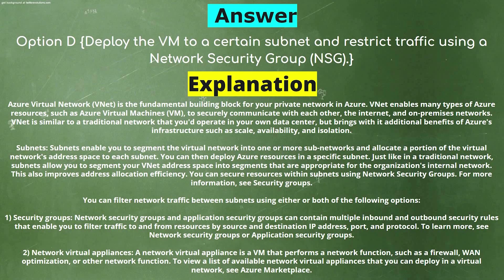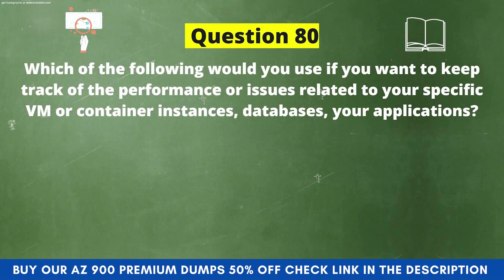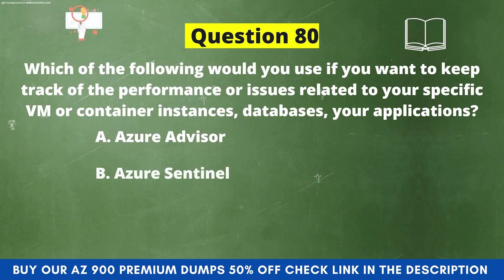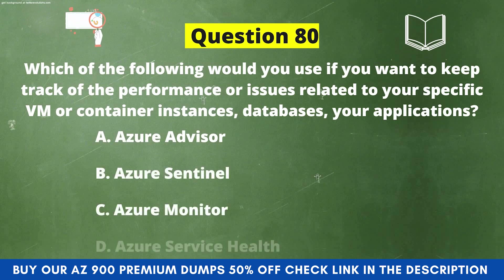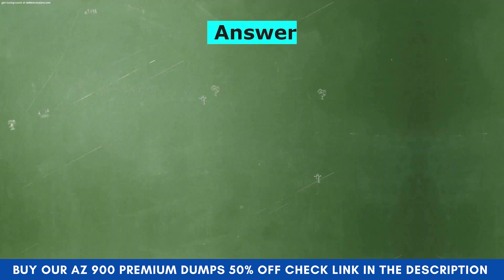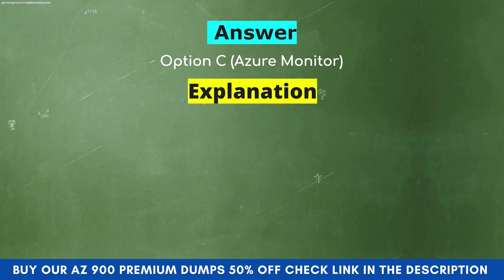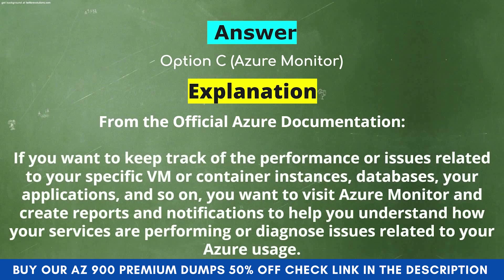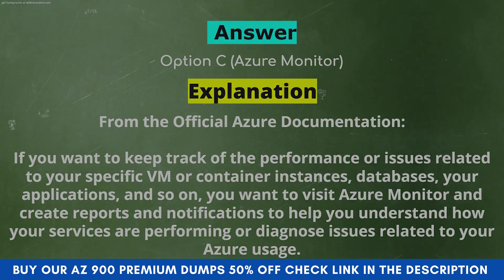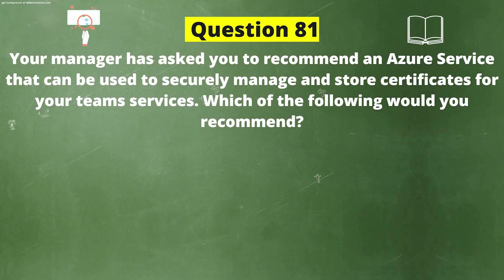Next question: Which of the following would you use if you want to keep track of the performance or issues related to your specific VM or container instances, databases, or your applications? Option A: Azure Advisor. Option B: Azure Sentinel. Option C: Azure Monitor. Option D: Azure Service Health. The correct answer is Option C, Azure Monitor. Explanation: If you want to keep track of the performance or issues related to your specific VM, container instances, databases, or applications, you want to visit Azure Monitor and create reports and notifications to help you understand how your services are performing.